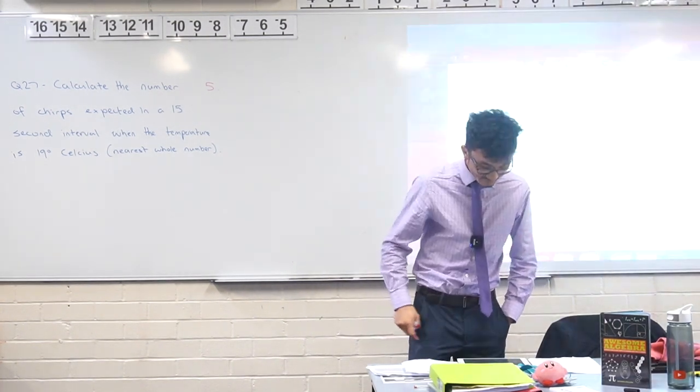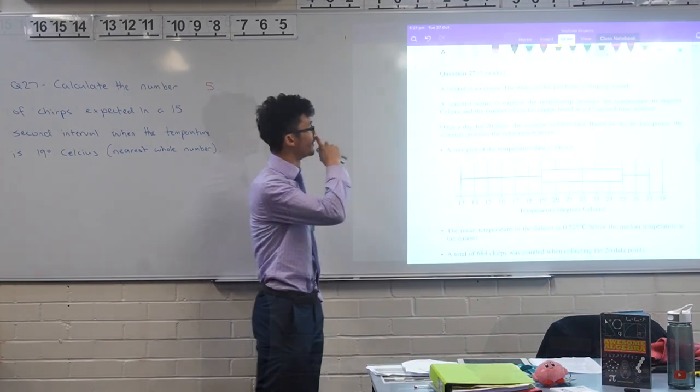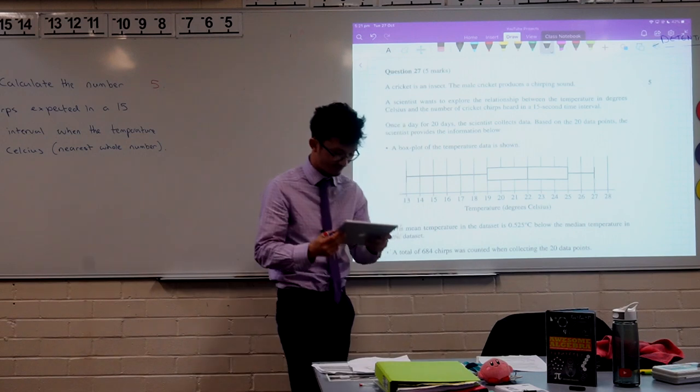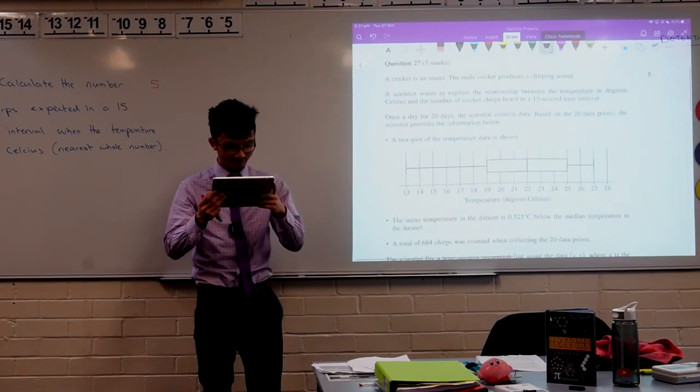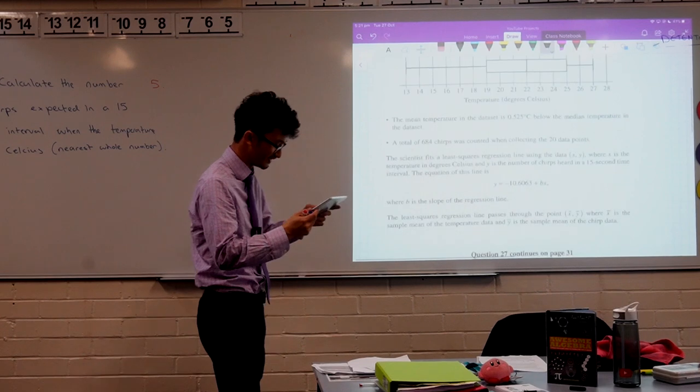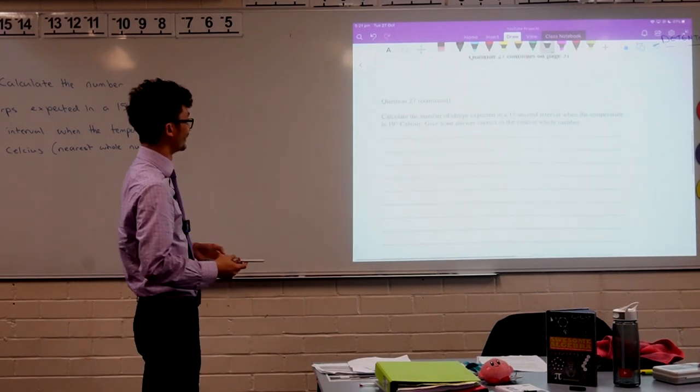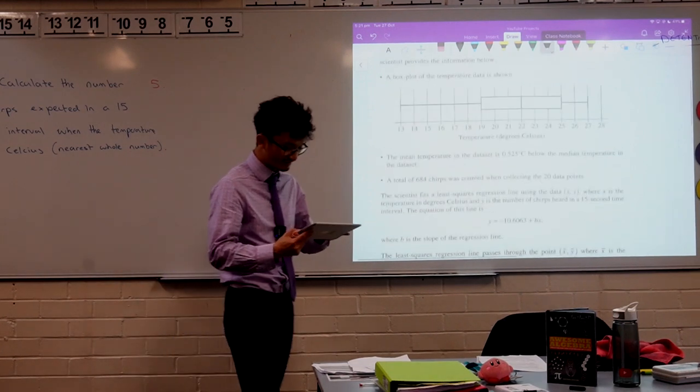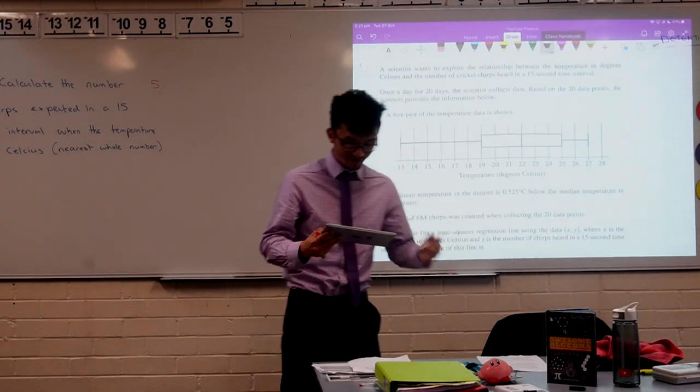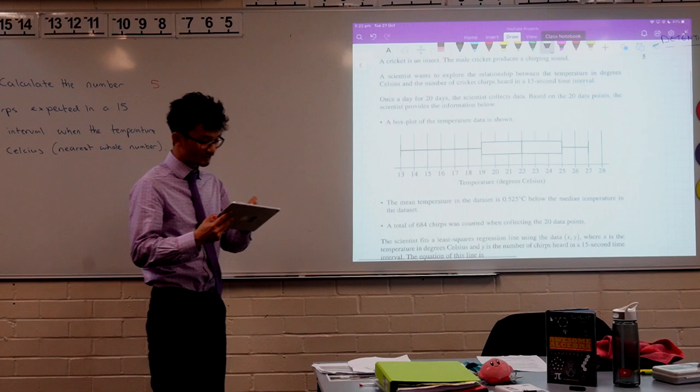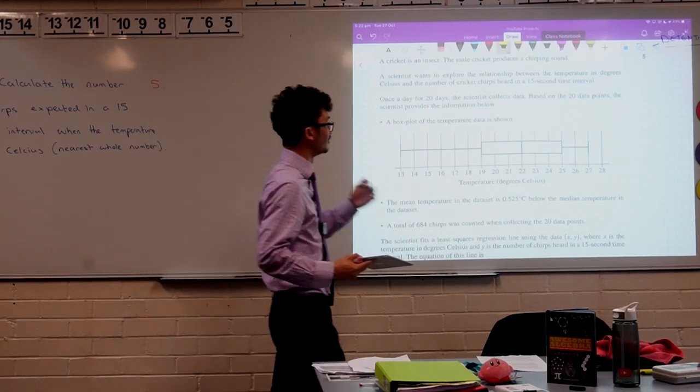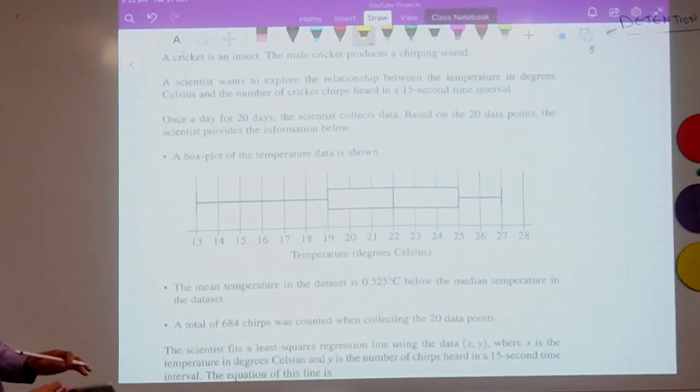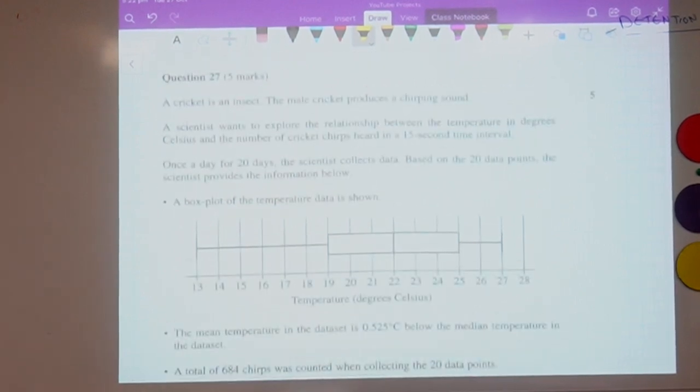The problem here is question 27. And the first thing to note is that there's literally a whole page of working out. So it's a whole page of information before we get to a two-line question. So I think that's just a really interesting observation to make. What I'm going to do here is I'm just going to highlight the important info and then I'm going to use this to approach how we might look at the solution. Okay. So how do we actually tackle this problem?